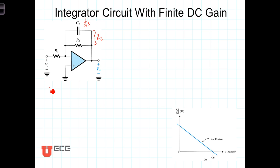So we have then Z2 is equal to the product of those two, 1 over C2S times R2, over the sum of them, R2 plus 1 over C2S.